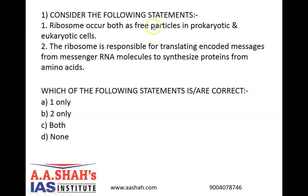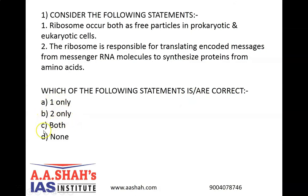Consider the following statements. Number one: ribosomes occur both as free particles in prokaryotic and eukaryotic cells. Number two: the ribosome is responsible for translating encoded messages from messenger RNA molecules to synthesize proteins from amino acids. Which of the following statements is or are correct? A: 1 only, B: 2 only, C: both, or D: none.